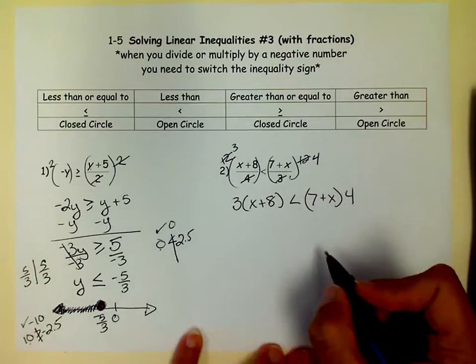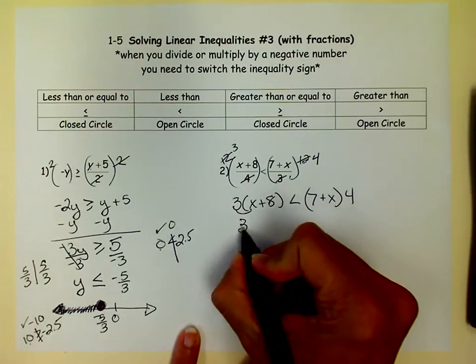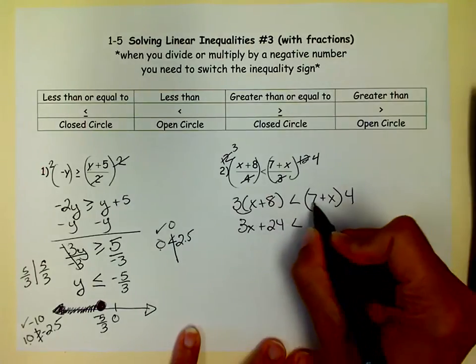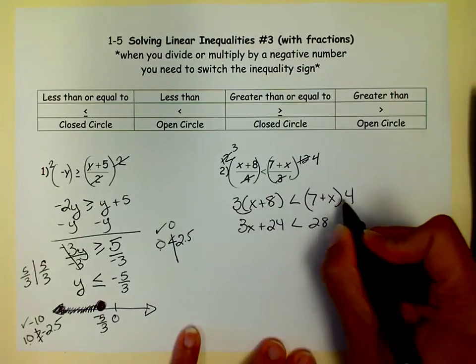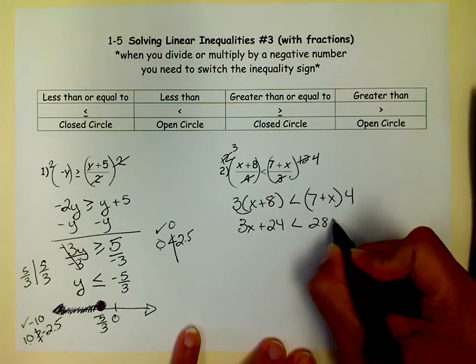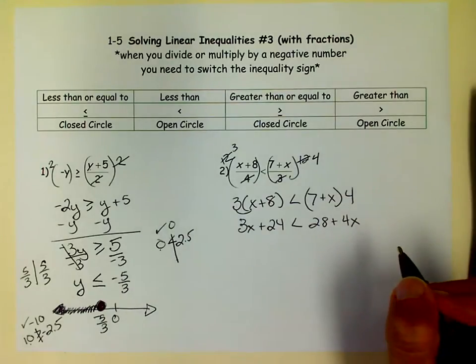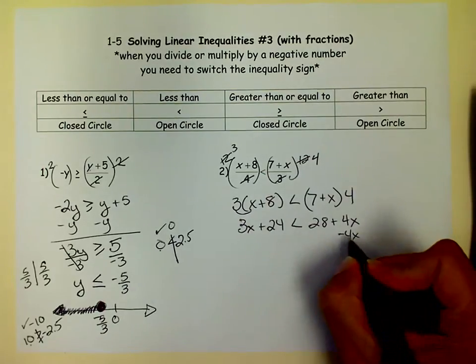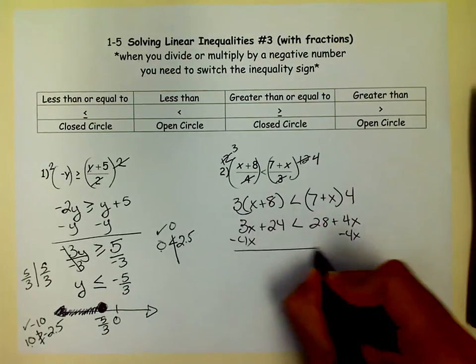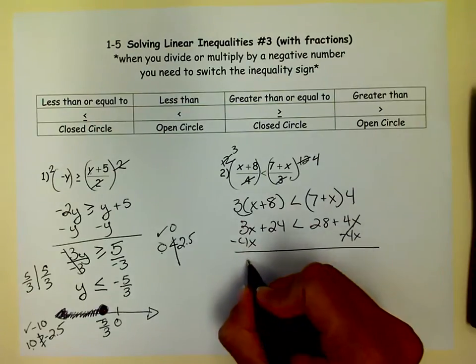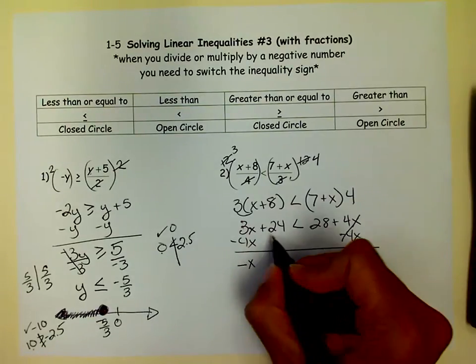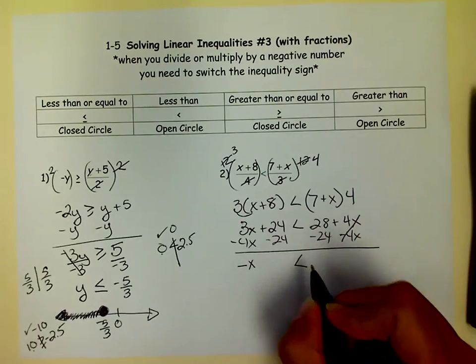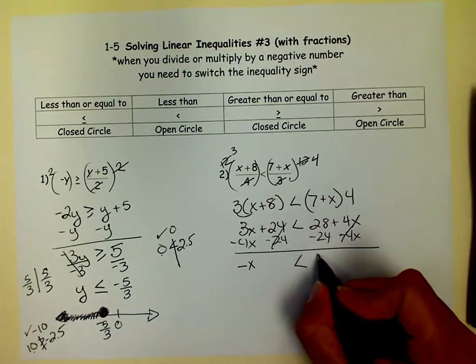And then we'll distribute. 3 times x is 3x. 3 times 8 is 24. 7 times 4 is 28. x times 4 is 4x. And then I want to get my variables on the left side and my numbers on the right side. So I'm going to minus 4x from both sides. Cancels there. And I get x, negative x. And I'm going to minus 24 from both sides. And I get 4.